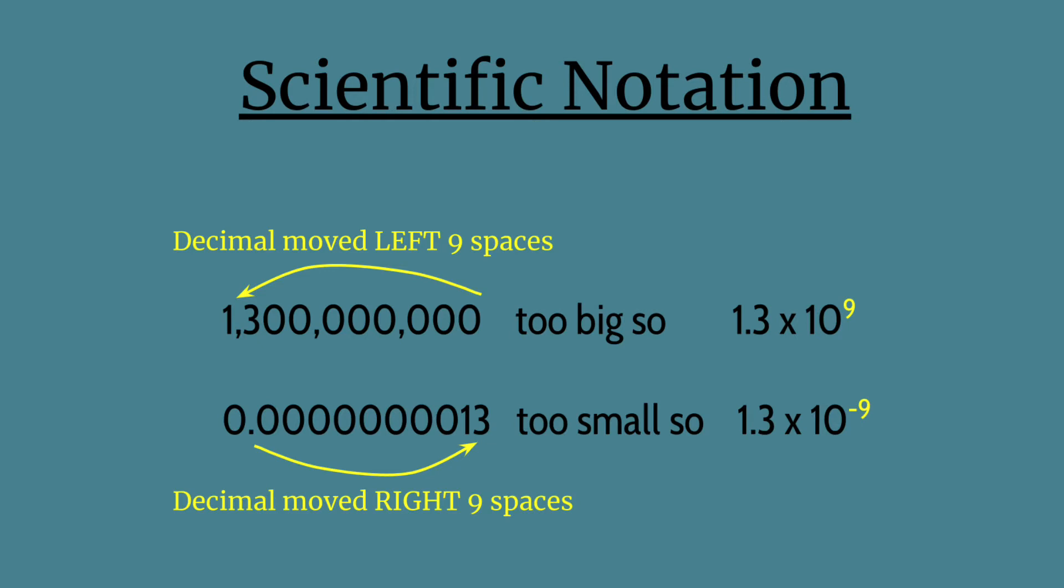Short, easy, looks a lot less crazy. And maybe we have a super small number like the one below it. 0.000000 and so on to get to the 13. That's too small, so let's make that 1.3 times 10 to the negative 9th. Boom!